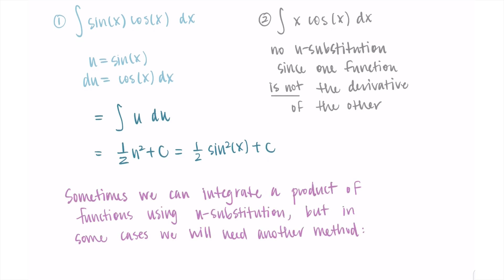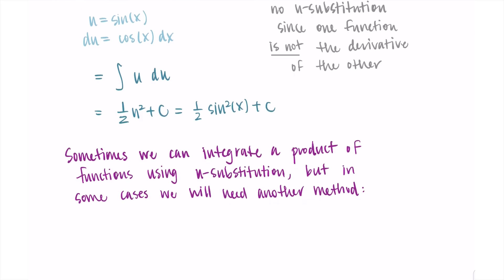So in summary, sometimes, as in example one, we can integrate a product of functions using u substitution. However, in some cases, like in example two, we are going to need another method. And this method is specifically called integration by parts.